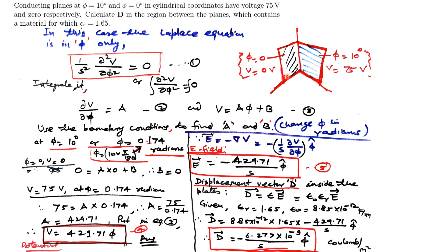This is the electric field between these two plates. Now we calculate the displacement vector D, which is related as D equal to epsilon times E, where epsilon equal to epsilon_0 times epsilon_r. Epsilon_0 is 8.85 times 10⁻¹² F/m and epsilon_r is 1.65. Substituting these values, D equal to 8.85×10⁻¹² times 1.65 times (minus 429.71/S) in the phi-cap direction, which gives D equal to minus 6.277×10⁻⁹/S in the phi-cap direction.